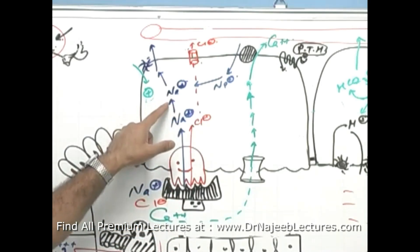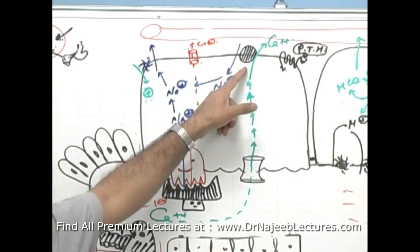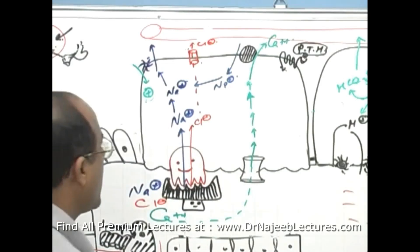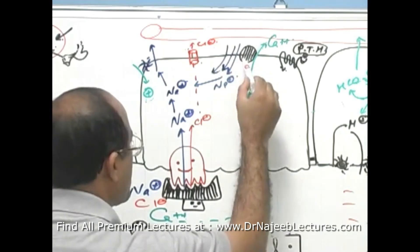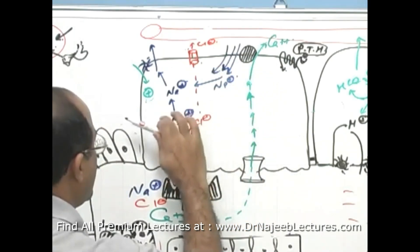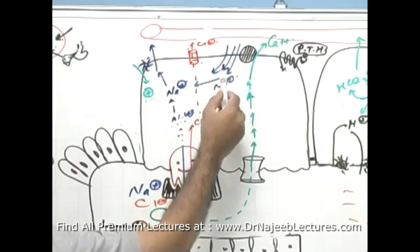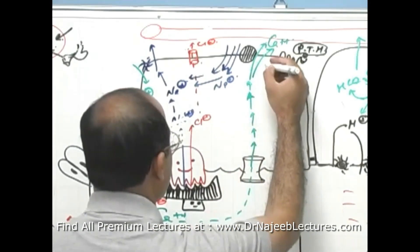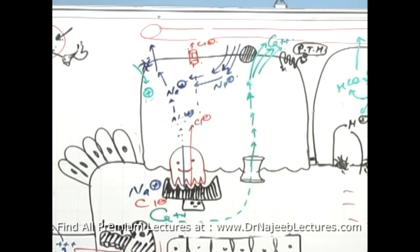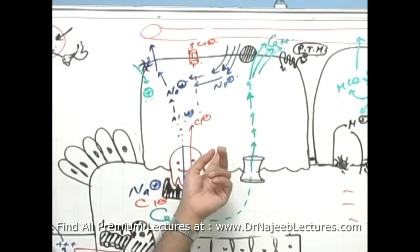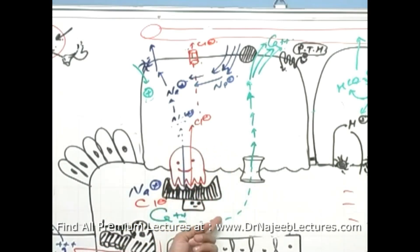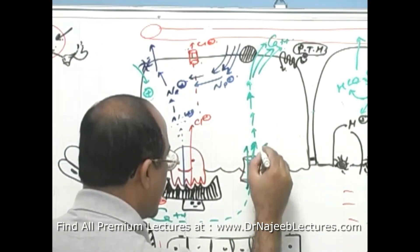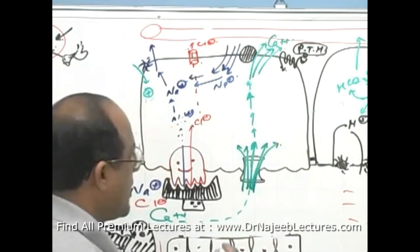When sodium supply from the luminal side is reduced due to blockage of the sodium-chloride symport by thiazide, sodium becomes very low in the cell. The cell compensates by overusing the sodium-calcium exchanger on the basolateral side. More and more sodium comes in through this exchanger, and consequently more and more calcium is pumped out from the basolateral side to the blood. This makes intracellular calcium very low.